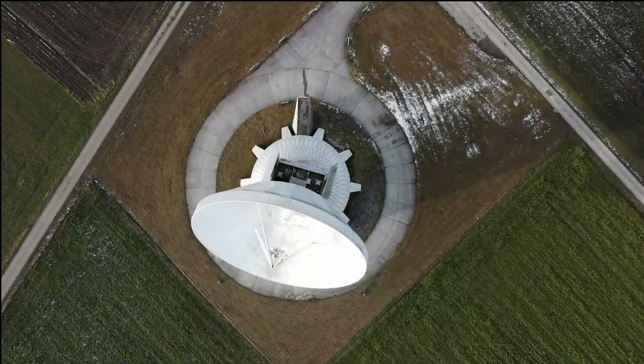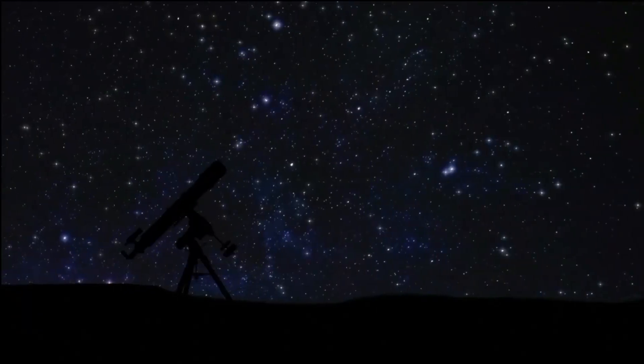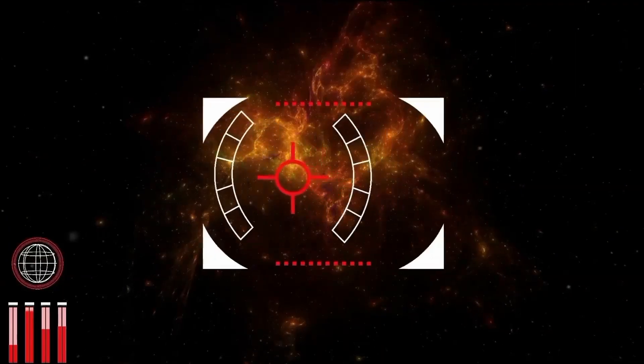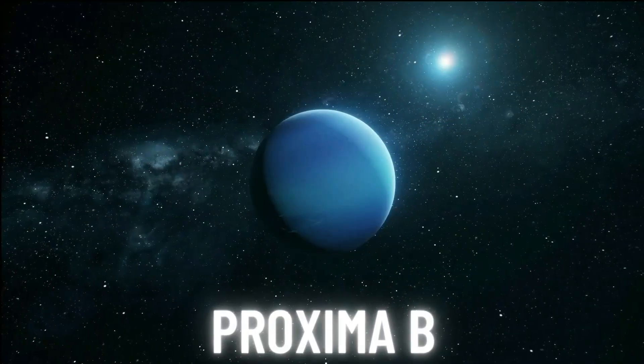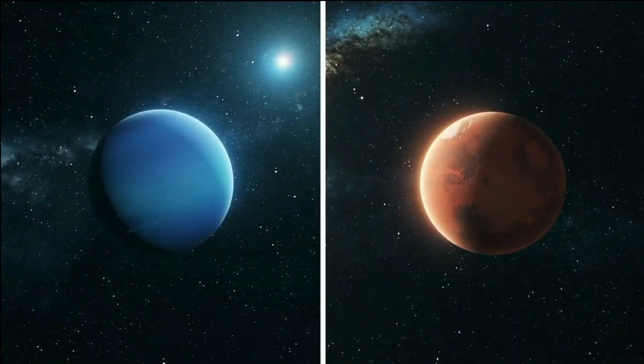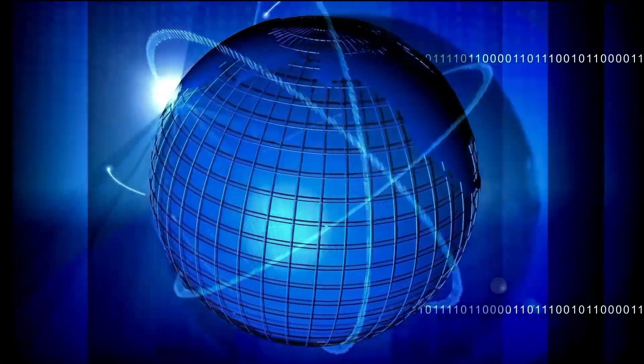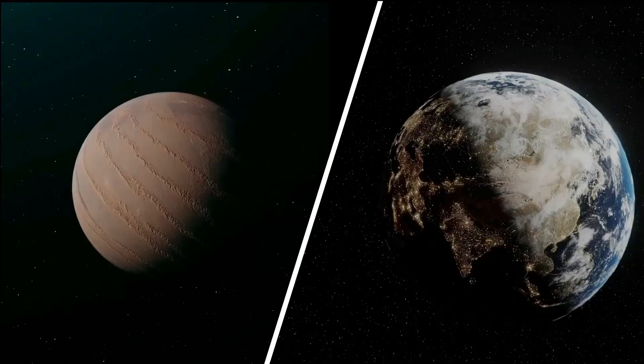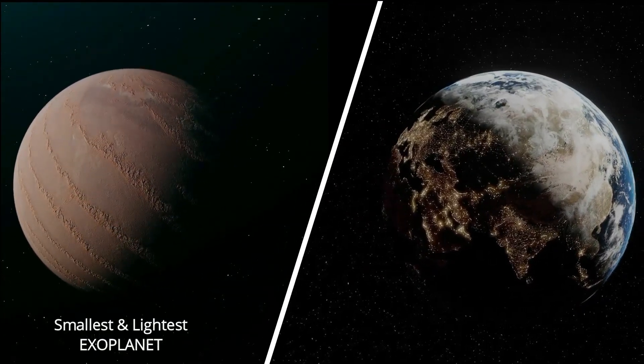The Very Large Telescope (VLT) of the European Southern Observatory was used by the research team to find the third exoplanet, which they named Proxima Centauri d. This comes in the wake of the recent discoveries of two more exoplanets, Proxima b and Proxima c, which took place in 2016 and 2020 respectively. One of the most fascinating pieces of information is that Proxima Centauri d only has a quarter of the mass of Earth and is one of the smallest and lightest exoplanets found so far.